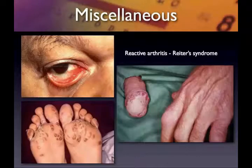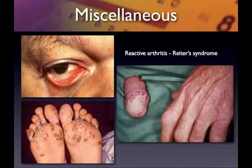The next patient's lesions make the diagnosis evident. After a history of chlamydia urethritis, gonococcal urethritis, cervicitis, or certain bacterial gastroenteritis infections, this is reactive arthritis — formerly called Reiter's syndrome. The classic triad is conjunctivitis, urethritis, and arthritis, memorized as 'can't see, can't pee, can't climb a tree.'